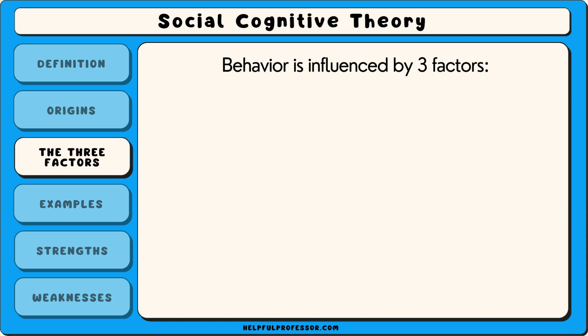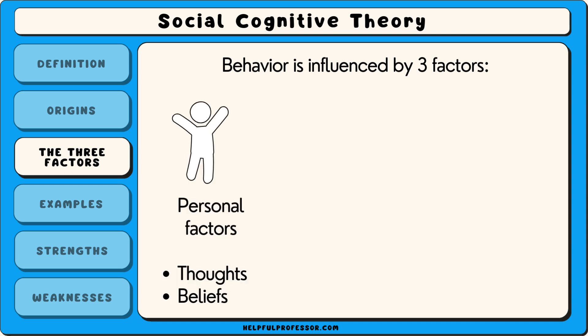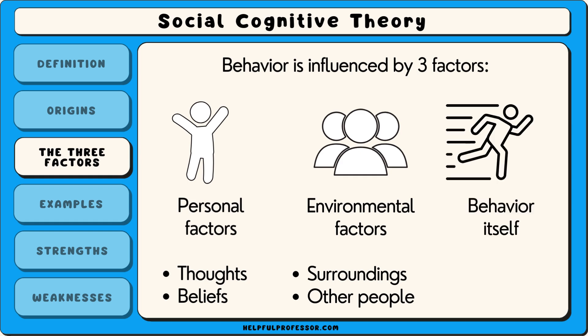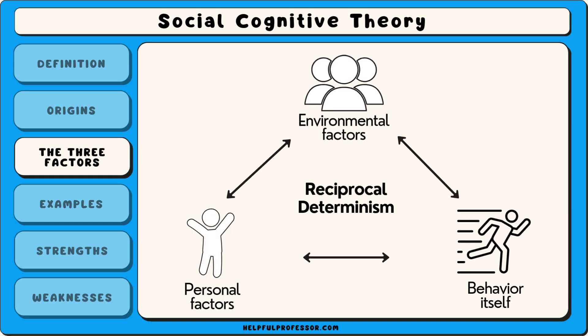Social cognitive theory focuses on the idea that behaviour is influenced by three factors: personal factors like thoughts and beliefs, environmental factors such as surroundings and other people, and behaviour itself. These three factors interact in a process called reciprocal determinism, where each one affects the others.